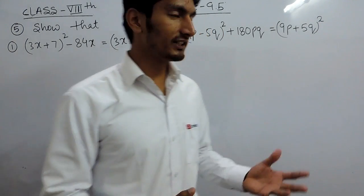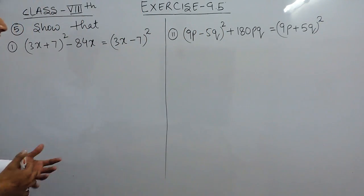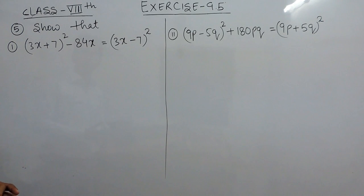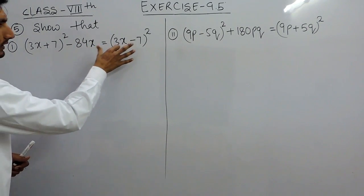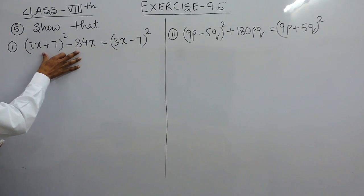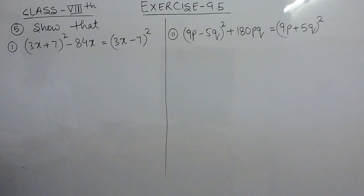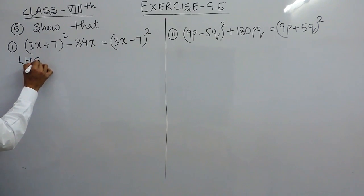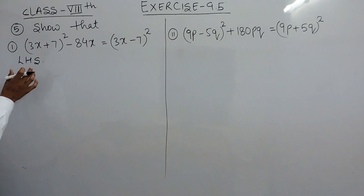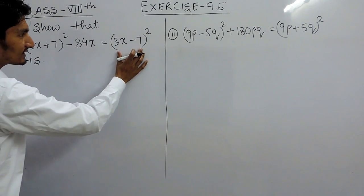Hello everyone. In this video we are going to solve the first two parts of question number 5. We have to show that the right hand side is equal to the left hand side. To solve this we can take any side — let's say we are solving for the left hand side, and we have to prove that the left hand side is equal to the right hand side.